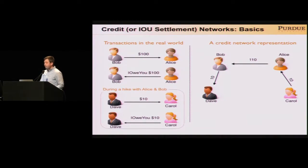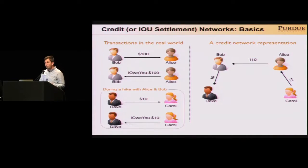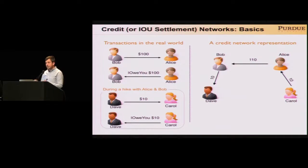Notice that for intermediate users like Alice, this settlement doesn't incur any credit loss. Before, she owed $100 and now her net balance is the same. So even though she owes a little more — $110 — she is also owed $10. In the end, the net flow, which is what matters, is the same as $100.